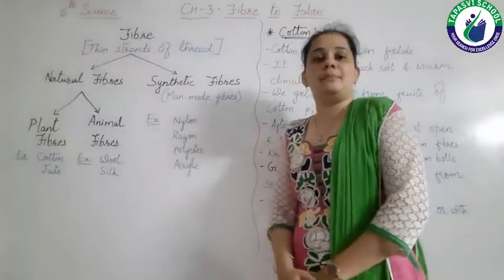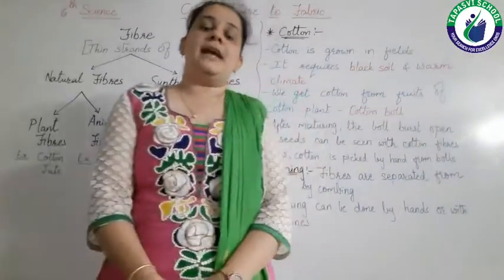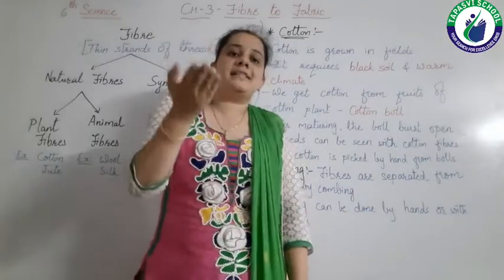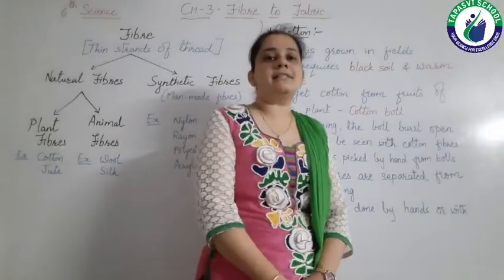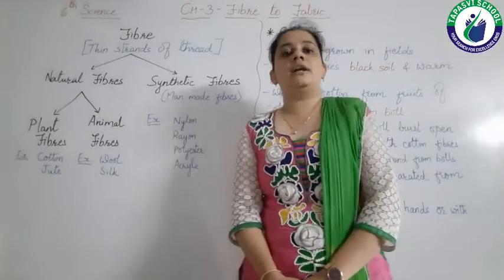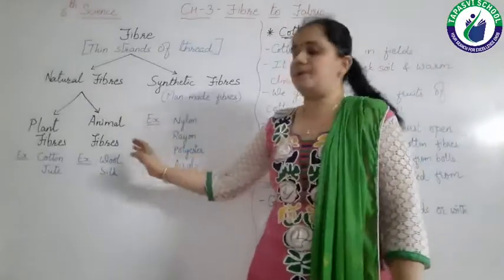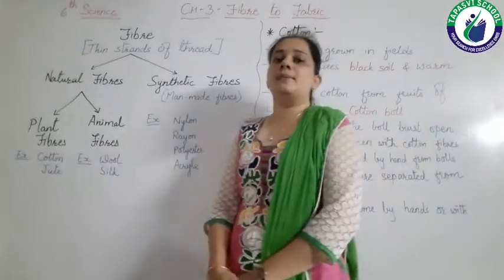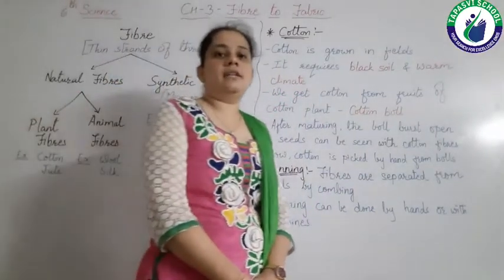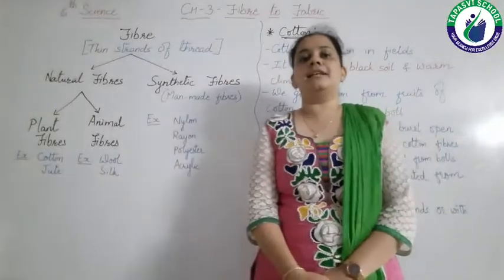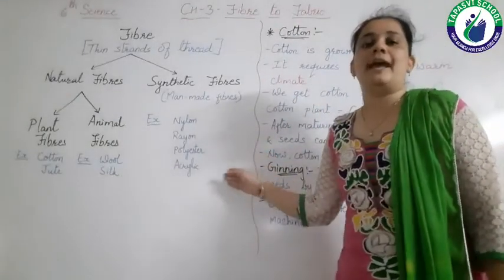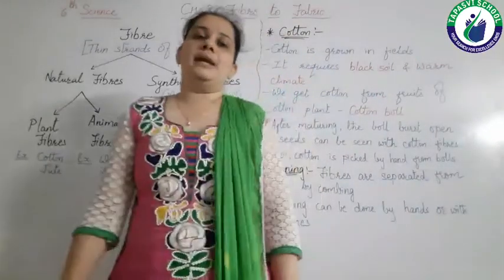The next is animal fiber. Examples of animal fibers are wool and silk. About animal fibers, you will learn in the next standard, that is in seventh standard. Wool and silk are the examples of animal fiber. Then the examples of synthetic fibers — nylon, rayon, polyester, acrylic — these all are synthetic or man-made fibers.